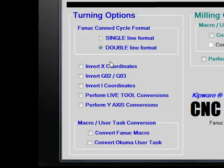Under the turning options, we can also invert X-coordinates, reverse G02 and G03 commands, as well as invert I-coordinates. Options are available for live tool conversions, as well as Y-axis conversions, and we can convert between Fanuc macro and Okuma user task.